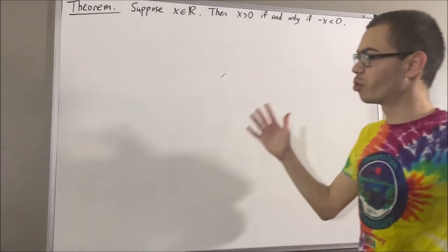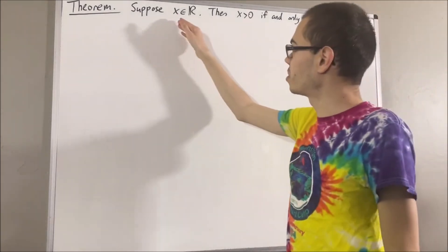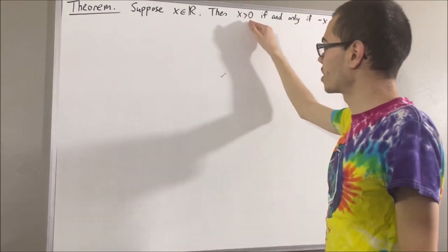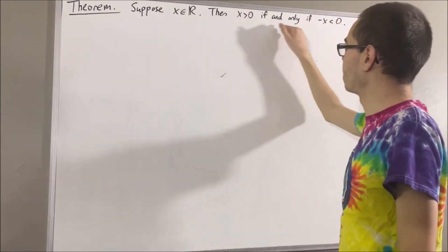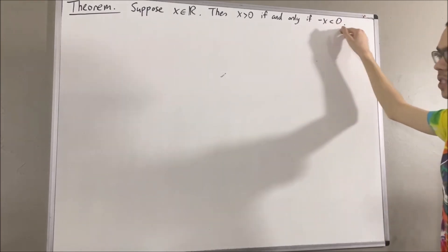In this video, we are going to prove the following theorem. Suppose x is a real number. Then x is greater than zero if and only if negative x is less than zero.